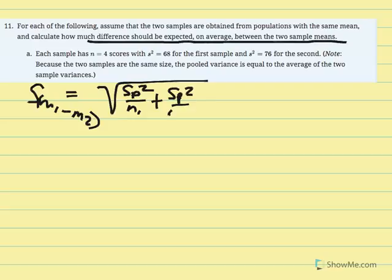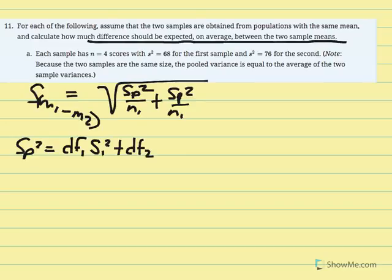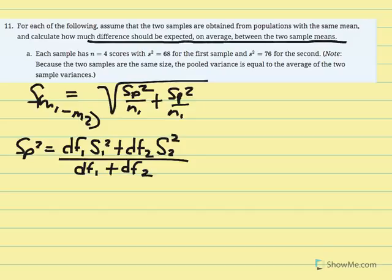The alternate pooled variance equation is: degrees of freedom 1 times variance 1, plus degrees of freedom 2 times variance 2, all over df1 plus df2. The other equation used SS1 plus SS2 over df1 plus df2, but since variance was given we use this form. With n equal to 4, degrees of freedom equal 3.